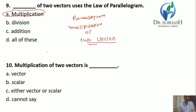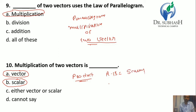Question 10: A multiplication of two vectors can be either a vector quantity or a scalar quantity, depending on the type of product. If we use the dot product between two vectors, we get a scalar quantity. If we use the cross product, we get a vector quantity. So the answer is C.